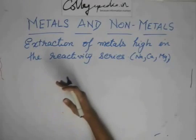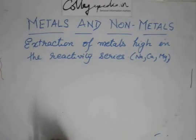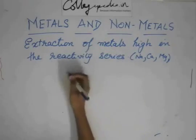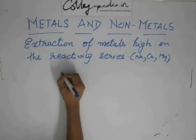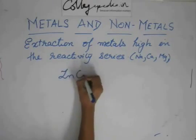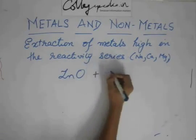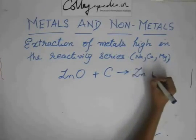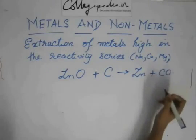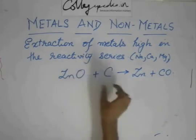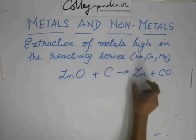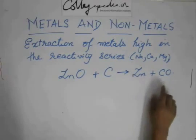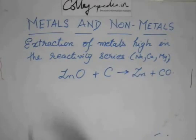They have a different method of extraction. What we used to do for metals medium in the reactivity series is that we would take an oxide like zinc oxide and reduce it with carbon to get zinc and carbon monoxide. We would take the oxide of the metal, take carbon, and reduce it with carbon to get the pure metal and carbon monoxide.